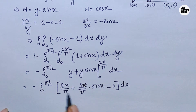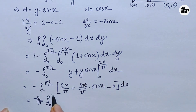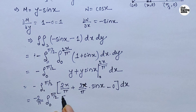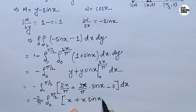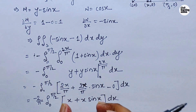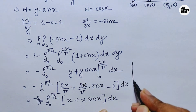Taking minus 2 by pi common, we have minus 2 by pi times the integral from 0 to pi by 2 of (x plus x sin x) dx. Now we need to integrate this with respect to x.